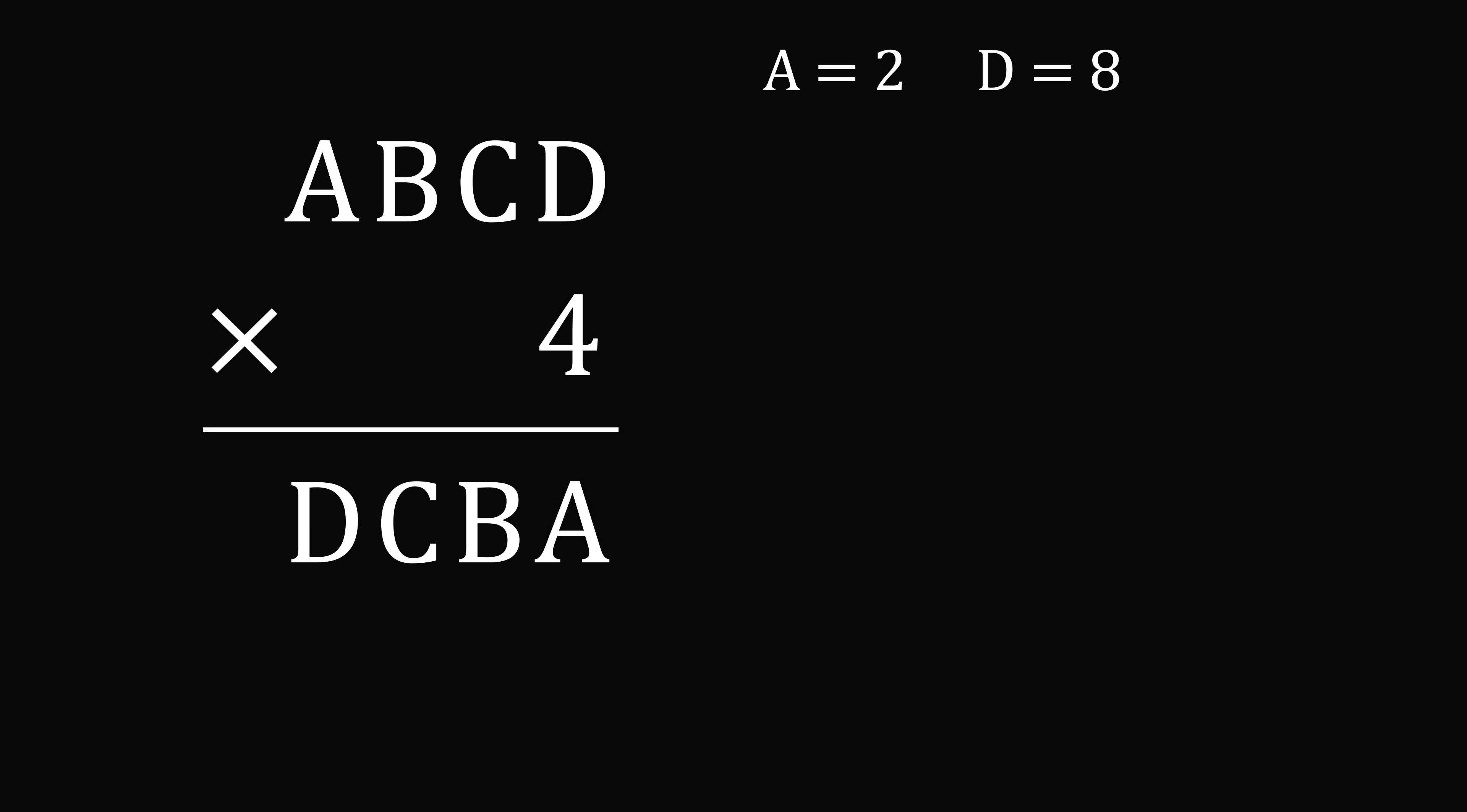So A is equal to 2, and D is equal to 8. We can now transform the problem into an algebraic expression. ABCD is the same as A times 1,000 plus B times 100 plus C times 10 plus D. We want to multiply this by 4.